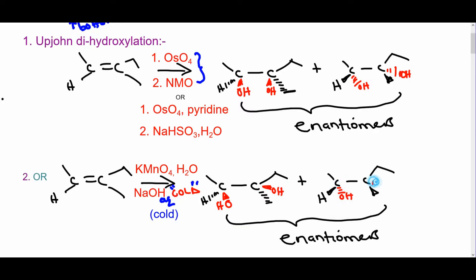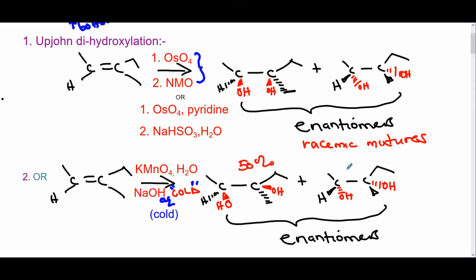It just depends on what reagents you have available. You have equal chances of addition from the top or bottom — 50% each — so you get enantiomers as a racemic mixture. That means if you have a one gram sample, 0.5 grams will be one enantiomer and 0.5 grams will be the other stereoisomer.